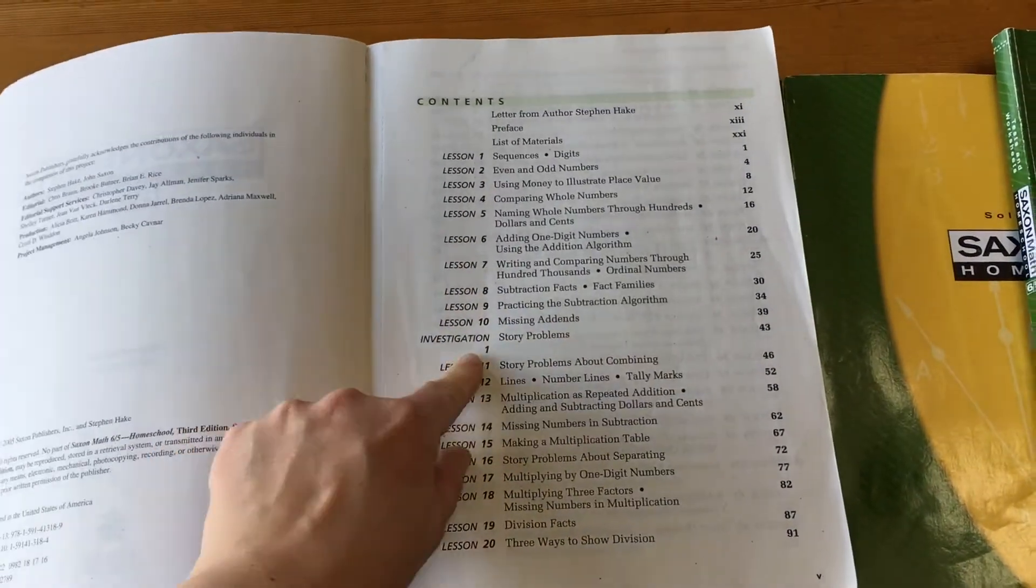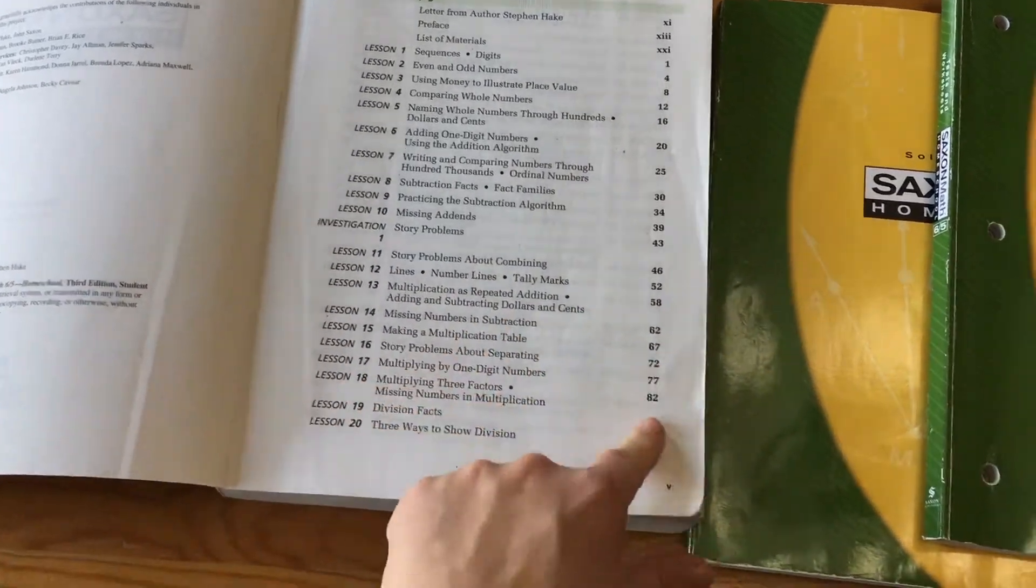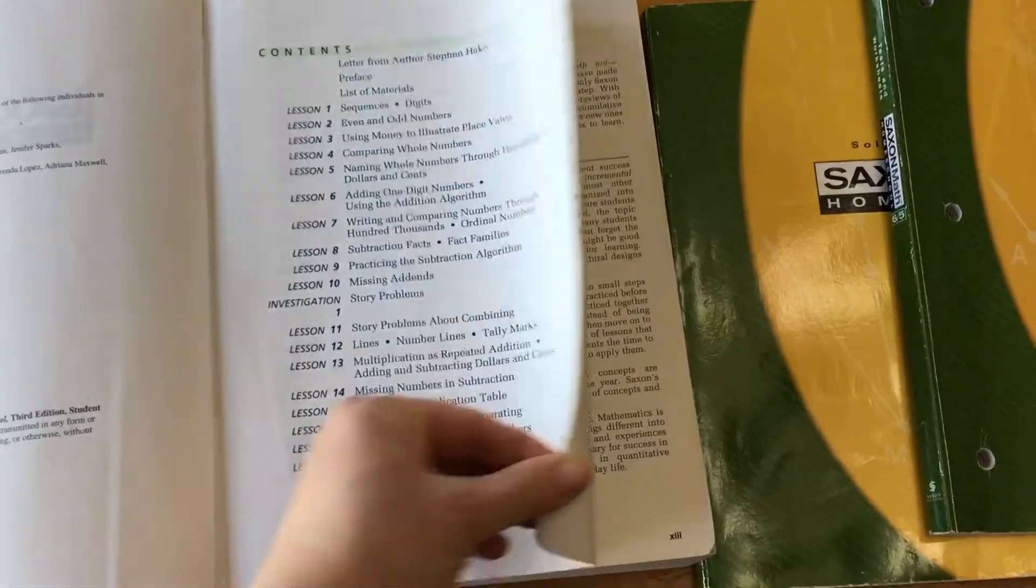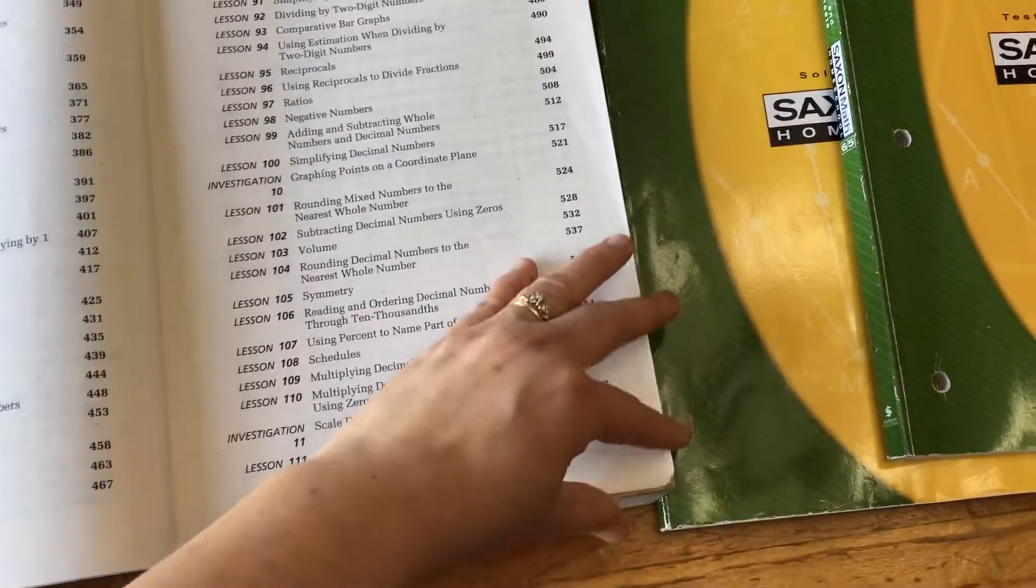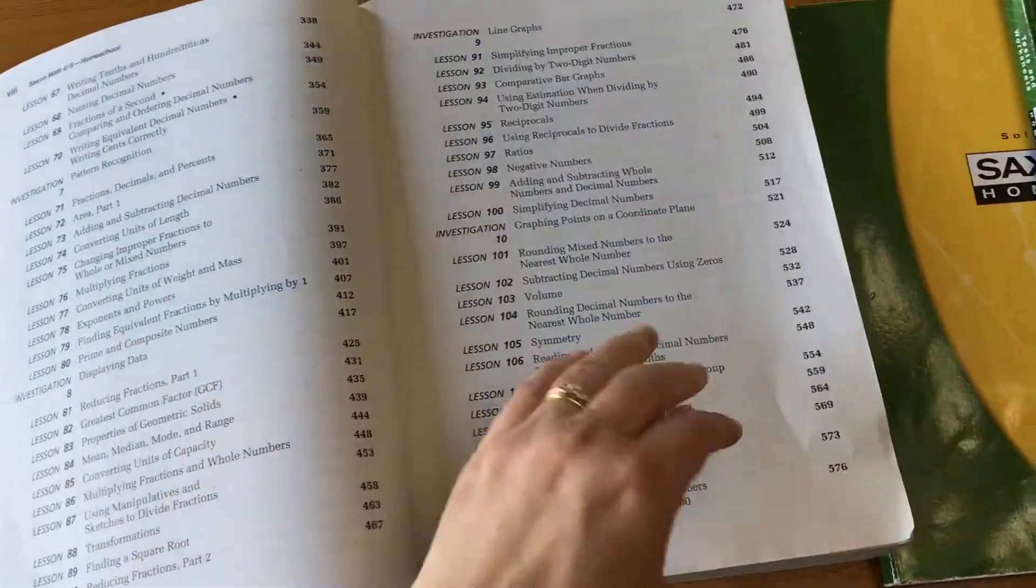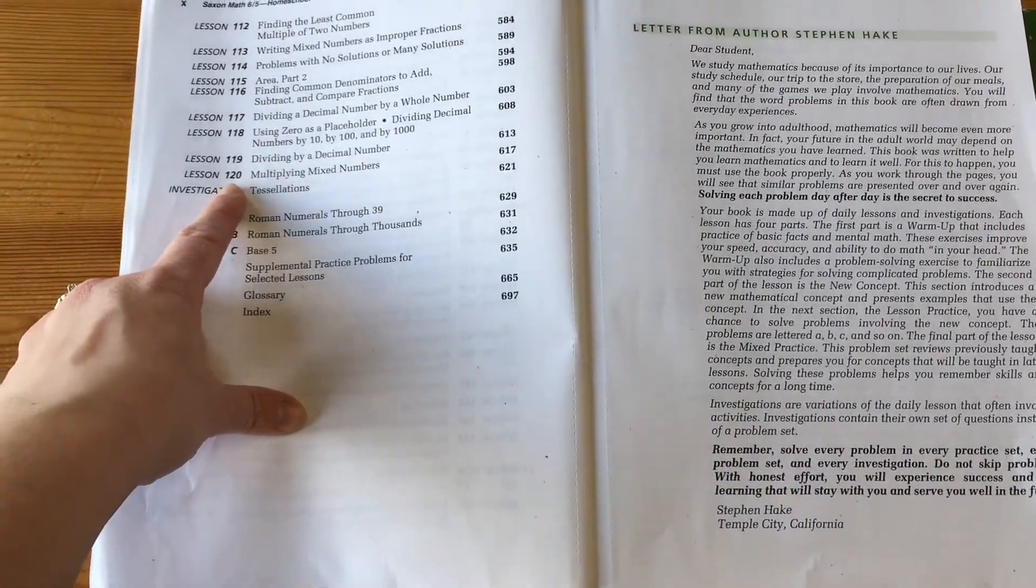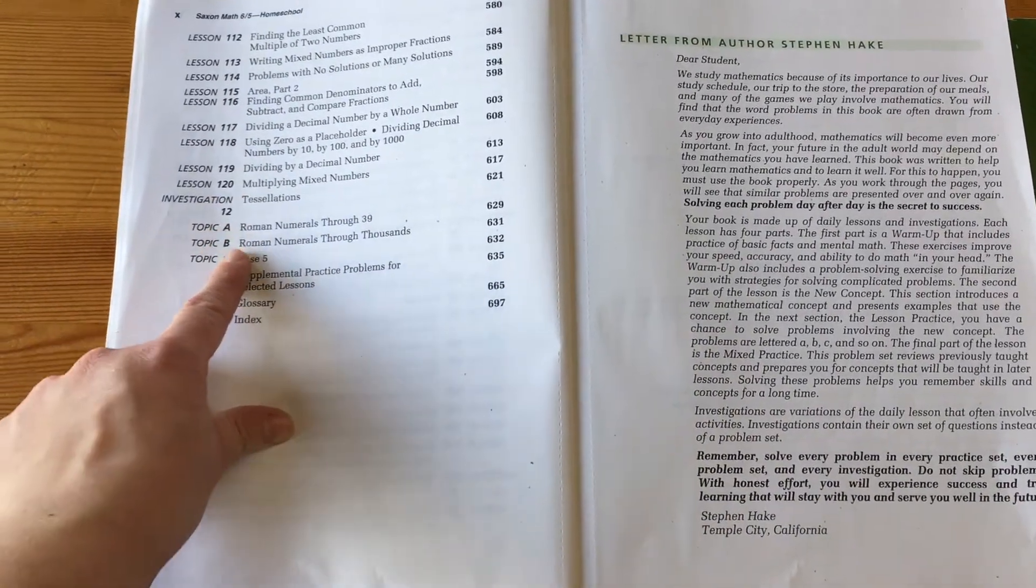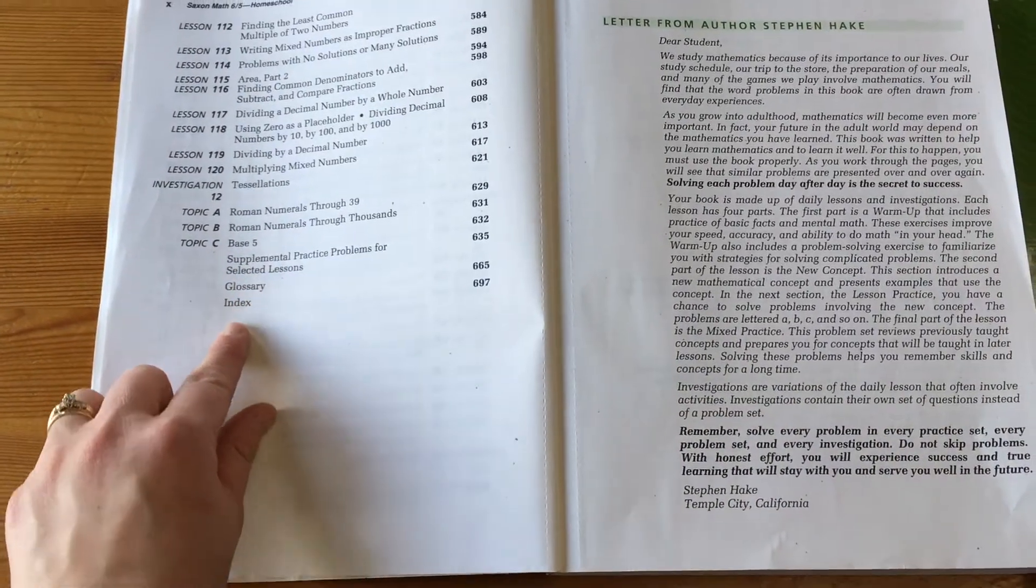So again, lesson with the investigations every 10th lesson, telling you what the lesson is about, what page they're on. And this one has those special sections, topics at the end as well. So there are 120 lessons, 12 investigations, and then there's a Roman numeral and base 5 section and the supplementary practice glossary index.